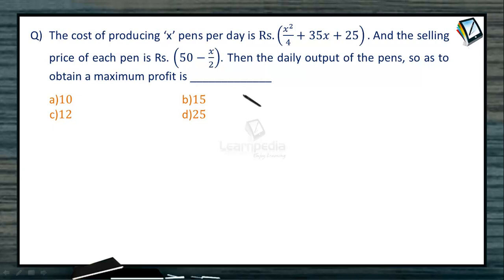From normal observation, we know that the cost price of x pens is rupees x²/4 + 35x + 25. And what is the sale price of x pens? Each pen sale price is given to us 50 - x/2, so how much will be the total sale price of x pens?